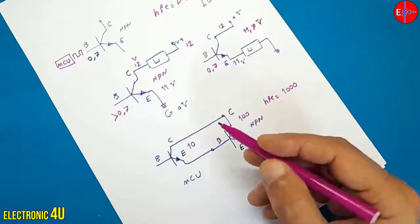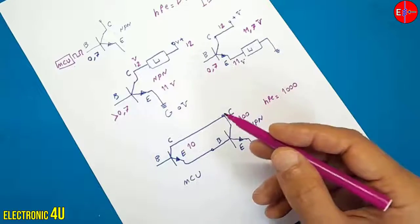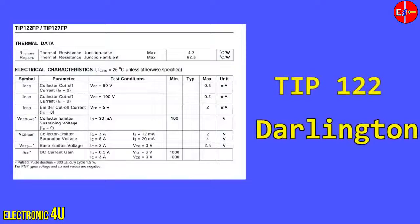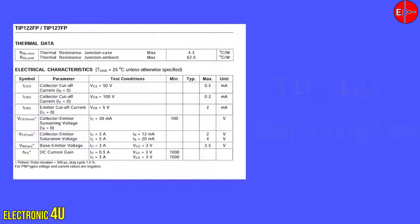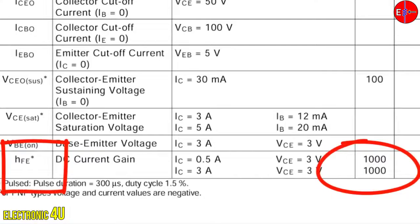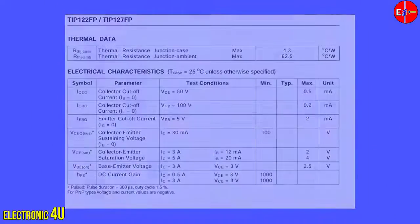The HFE of a transistor can be seen in the datasheet. This is a datasheet of the TIP122 transistor shown earlier. The HFE of this transistor is 1000. HFE plays an important role in transistor operation. If the HFE decreases, the transistor will not work properly.